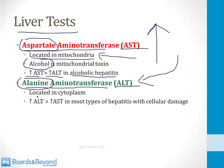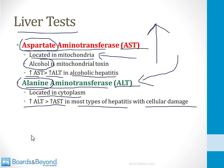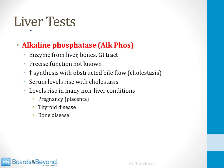ALT, on the other hand, is located in the cytoplasm. So in most types of hepatitis where there is cellular damage to the cytoplasm, you will see increases in ALT that are greater than the increase in AST. Both enzyme levels go up in any form of liver damage, but the key point is which enzyme level will climb more. In alcoholic liver disease, the AST will climb more than the ALT. In most other forms of hepatitis, the ALT will climb more than the AST.